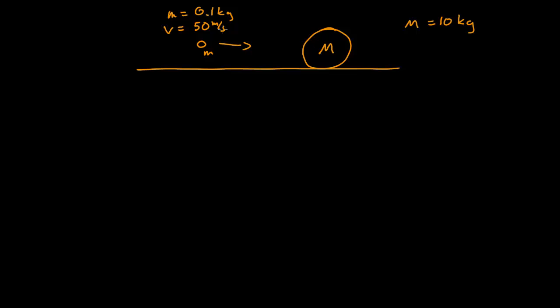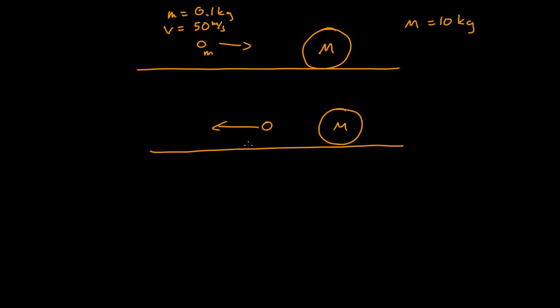It's going to collide with the mass and then bounce off. After this collision, it has a speed of 40 meters per second in the other direction. I want to analyze this in terms of impulse and momentum, and find out what happens to the large mass and what about the forces that existed between the masses when they collided.